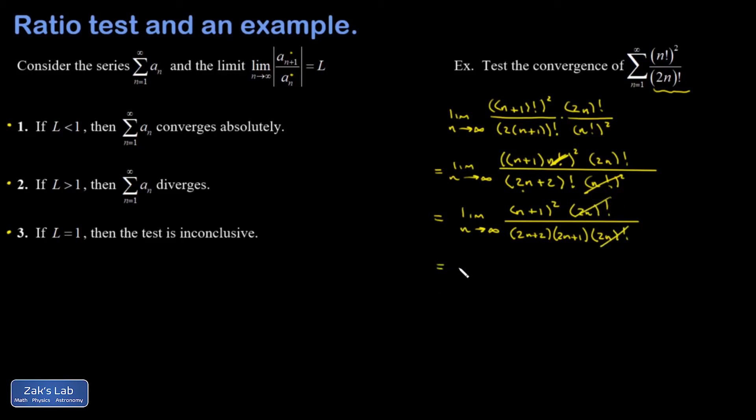Now I have a simple limit of a rational expression. If I go ahead and expand this, it's going to be n²+2n+1 in the numerator, and it's going to be 4n²+6n+2 in the denominator.